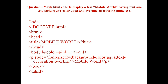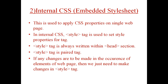Now we will start with internal CSS. Internal CSS is also known as embedded stylesheet. It is used to apply CSS properties on a single web page. In internal CSS, a style tag is used to set style properties for tags, and you define all CSS properties inside that style tag. The style tag is always written in the head section, it is a paired tag so it must be closed. If any changes are needed for elements on the page, we only need to make changes in the style tag.